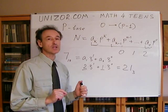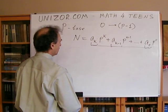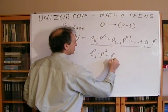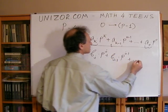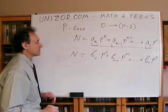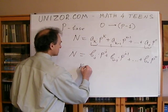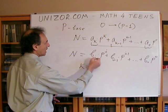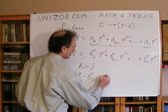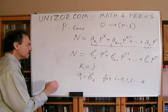Secondly, we have to prove it's unique, which means if you have another representation of the same number in the same p-based system with different multipliers, like b_j times p to the j degree plus b_{j-1} times p to the j minus 1 plus etc. plus b_0 times p^0, then it's exactly the same representation. Which means k should equal j, and all these multipliers should equal each other: a_i equals b_i for i equals 0, 1, 2, etc., up to k. So this is uniqueness.